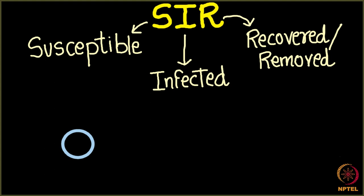If you are susceptible, I am going to show you by a blue circle. If you are infected, I am going to show you by an infected circle. And if you are recovered or removed, I am going to show you by a yellow circle. So yellow circles can be ignored from our network because they have recovered and removed. They have nothing to do with the spreading of the disease now.